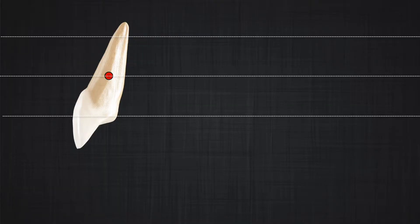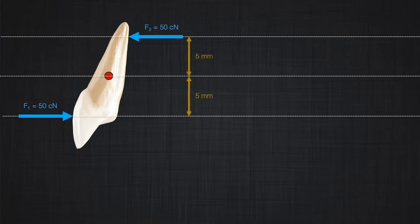Assume we apply a force F1 that is five millimeters away from the center of resistance, and we apply the opposite force F2 that is five millimeters also away from the center of resistance, but applied in the opposite direction and parallel to force F1. What would happen to the tooth?